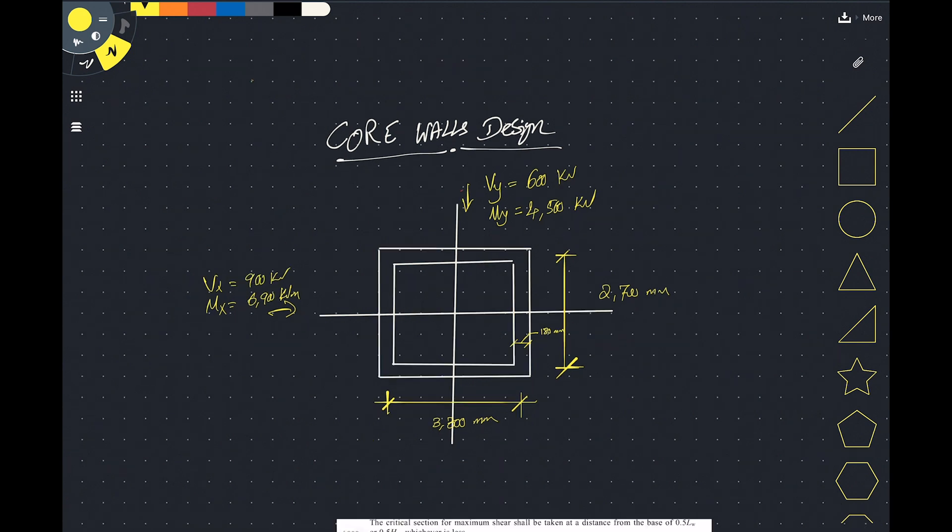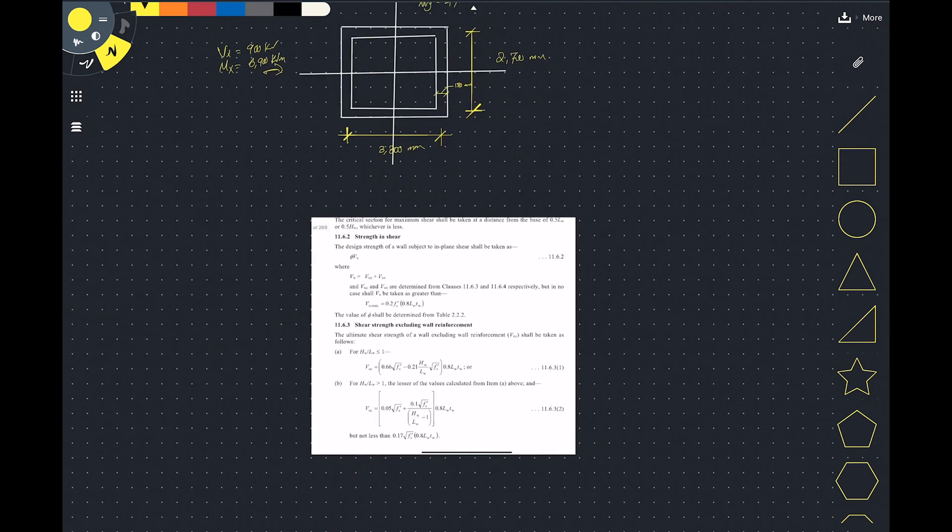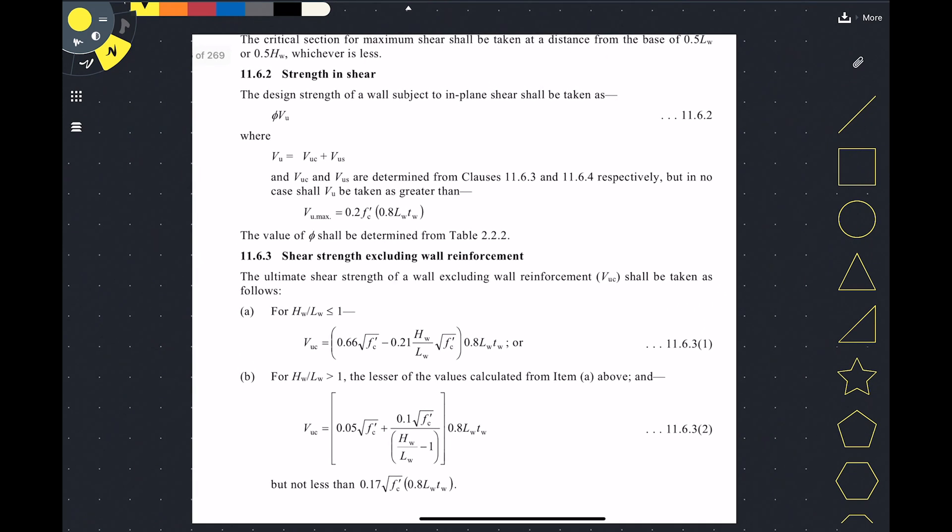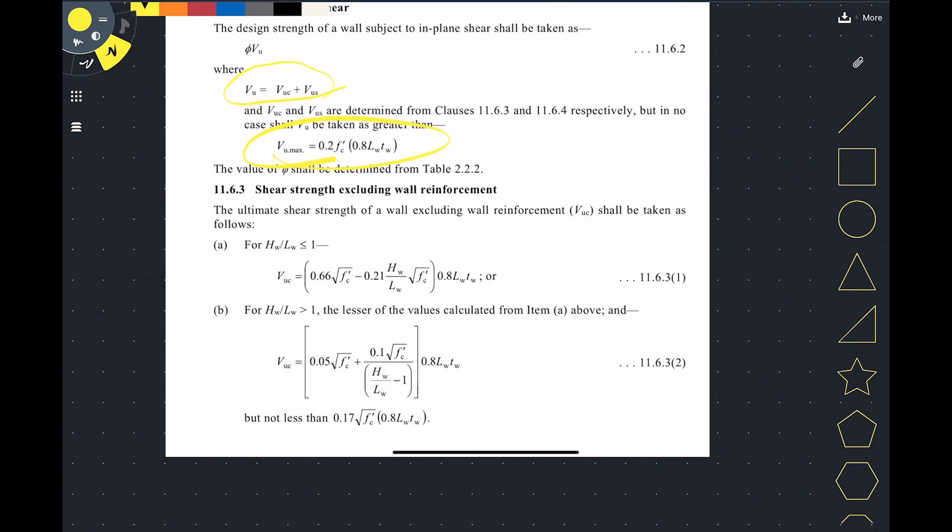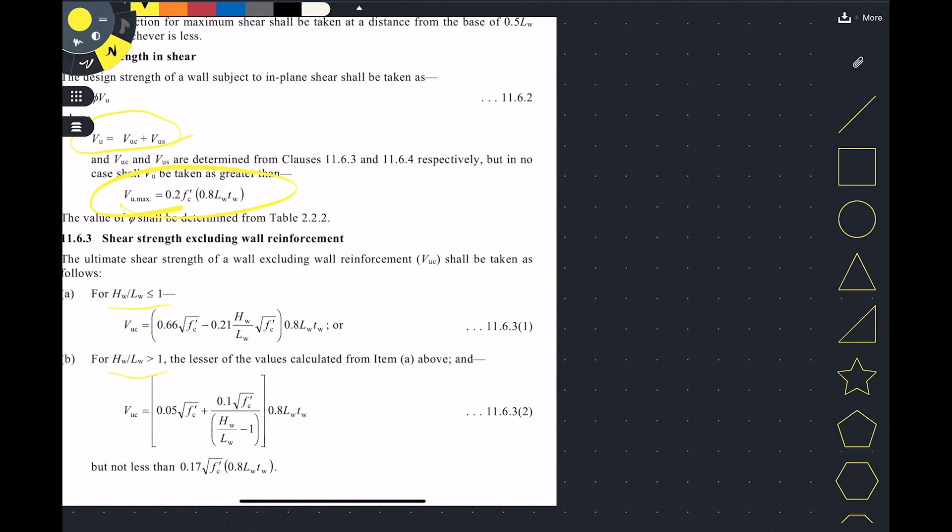So let's have a look at AS3600. It's fairly simple like a concrete beam in shear as well. You've got a component due to the concrete and a component due to the steel, and you've got a maximum shear that the wall is not going to be able to take any higher than that, doesn't matter how much steel you add in the wall. So let's look first at the concrete shear capacity. You've got two situations: one when your height to length ratio is less than one and when your height to length ratio is more than one.